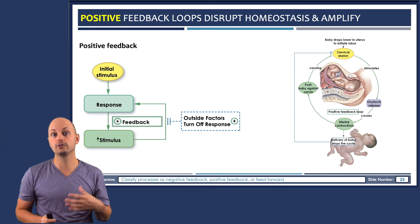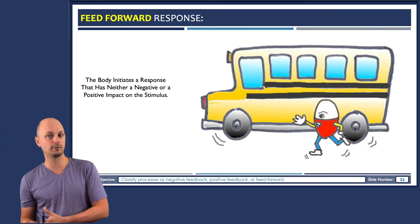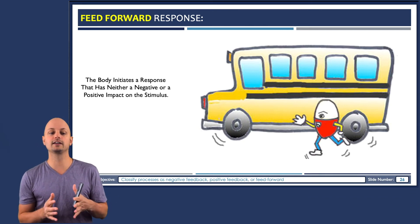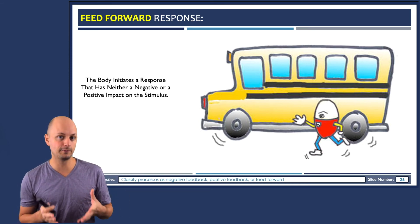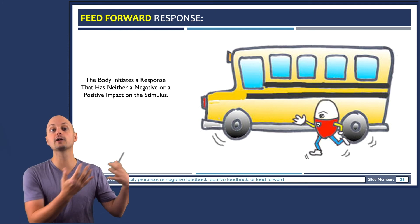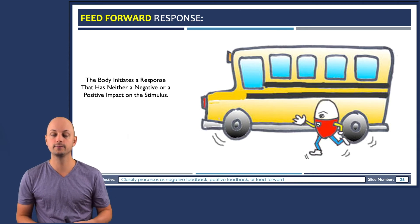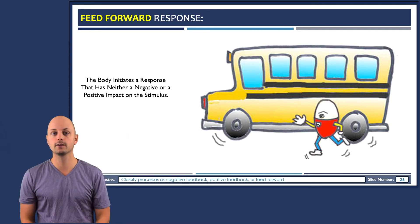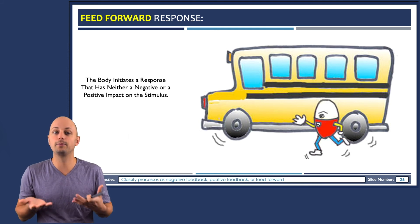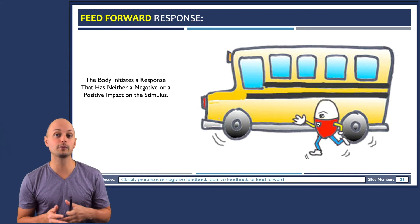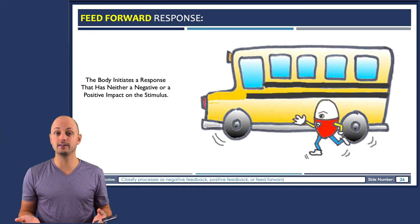In open systems, also known as feed-forward responses, there's no relationship between the stimulus and the response. In this picture of what looks like Humpty Dumpty chasing a bus, we're representing a situation where you walk out of your house and see your bus driving away from the bus stop without you. This causes an instant increase in your heart rate and respiration rate. But you're breathing heavy and your heart is pounding, and it's still not going to bring the bus back to the bus stop or prevent you from seeing it pull away. Therefore, there's no relationship between the stimulus and your response.